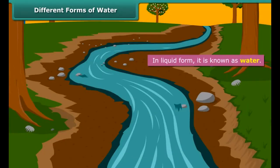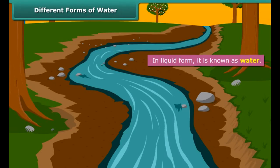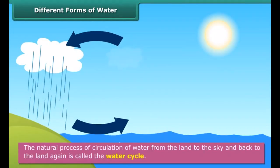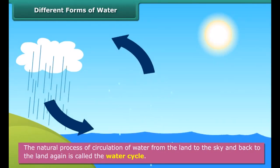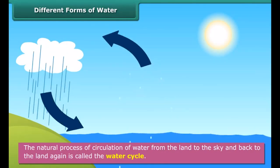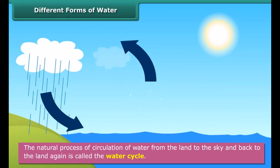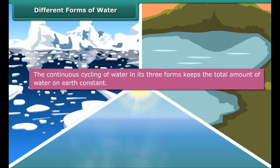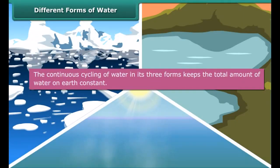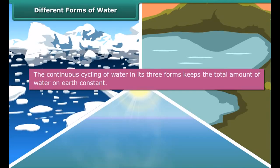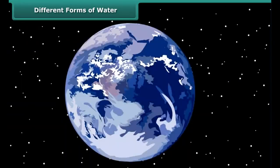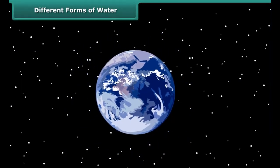The most common form that water takes is the liquid form, and it is in this form that it is simply known as water. The natural process of circulation of water from the land to the sky and back to the land again is called the water cycle. The continuous cycling of water in its three forms keeps the total amount of water on earth constant, even when the whole world is using it.